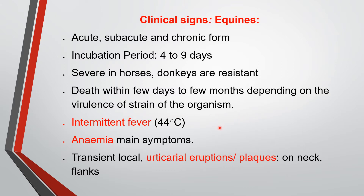The symptoms are intermittent fever — a period of fever for a few days, then the animal becomes normal for a few days, then fever again. Anemia is the main symptom. Another important symptom is transient, temporary, local urticarial eruptions — a red, edematous plaque or wheal-like structure, just like a mosquito bite. These are found on sensitive areas of the neck and flanks.